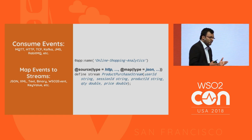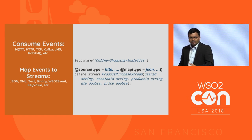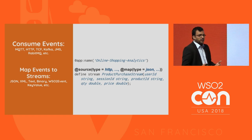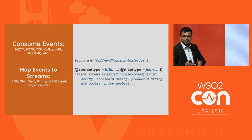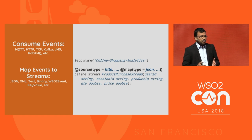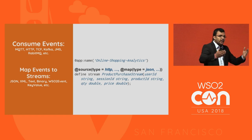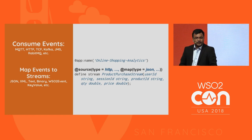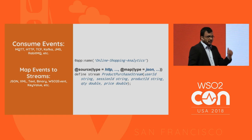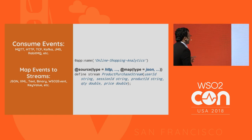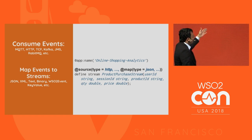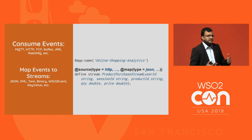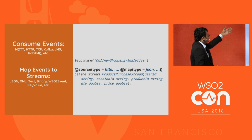Now let's say we've defined a stream and want to receive events from different sources. There are multiple event sources available — we can receive events from transports like MQTT, HTTP, TCP, Kafka, and various others, which can also be extended. From these transports, you can receive data in different formats like JSON, XML, text, and WSO2 events. To specify event consuming and mapping, you add a source annotation defining the source type and the mapping type — for example, JSON map or XML map.